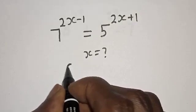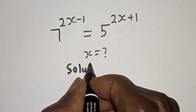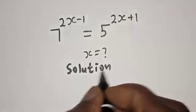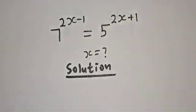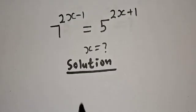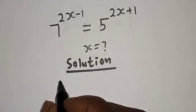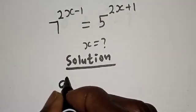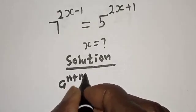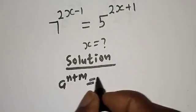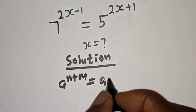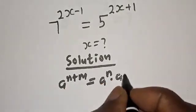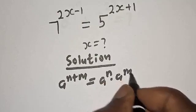Solution. Take note of this exponential rule: if you have a raised to power n plus m, this is equal to a raised to power n multiplied by a raised to power m.